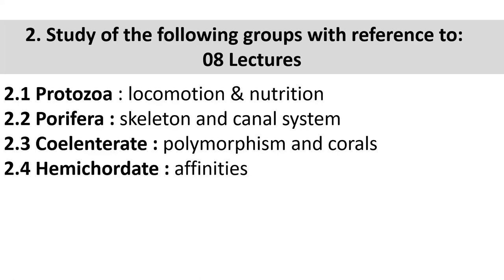The second phylum is Porifera. In Porifera we will learn skeleton and canal system. Porifera are non-chordates - non-chordata means they do not have a notochord. The skeleton provides the internal support to the Porifera. Porifera are mostly marine organisms found in the sea and ocean. The skeleton is made of calcium carbonate spicules in some, while others have different skeletal material. The skeletal feature is the basis for classification between classes in Porifera.